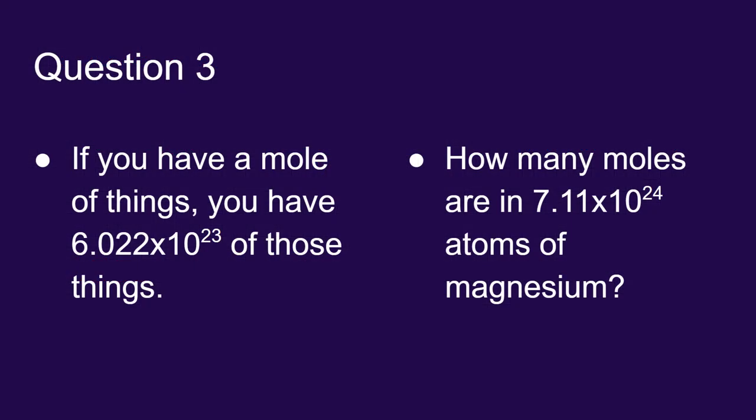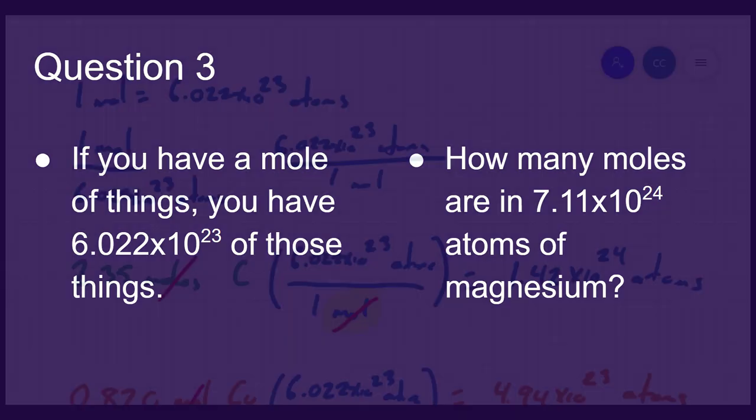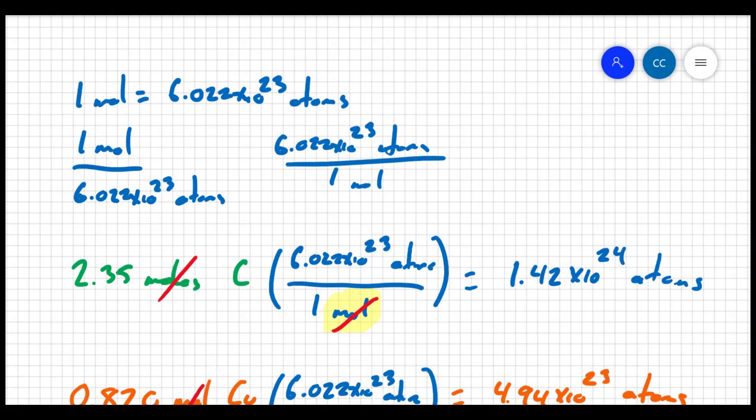Now let's try one in the other direction. Let's say I'm given 7.11 times 10 to the 24 atoms of magnesium, and I would like to know how many moles are present. We're still using that fundamental definition of a mole.